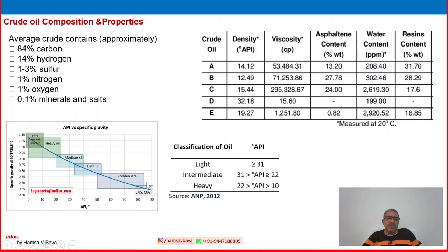LNG and CNG are the lightest. Then condensate is coming — also light, around C5 to C6. Then light oil, which is the real crude oil area, starting from C5 or C6 and above. Then medium oil, heavy oil, and extra heavy oil. Specific gravity is increasing and API gravity digits increase from smaller to larger for lighter oils. Water is at specific gravity of 1, and above 1 there are some heavy oils. We commercially represent using API gravity as the classification of crude oil.